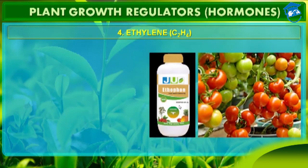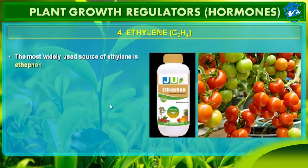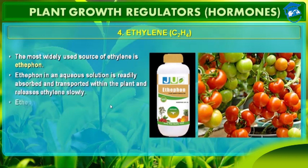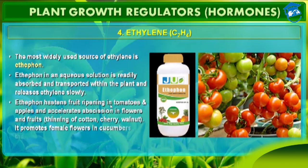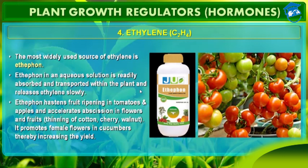Ethephon — what is it? Ethephon hastens fruit ripening in tomato and apple, and accelerates abscission in flowers and fruits. It also promotes female flowers in cucumber, thereby increasing the yield. Ethephon is the most widely used commercial source of ethylene. Ethephon is an aqueous solution which is readily absorbed and transported within the plant, and it releases ethylene slowly.